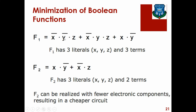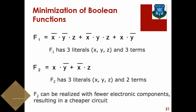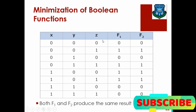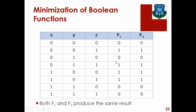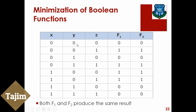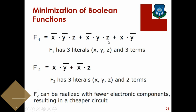We have x, y, and z — 3 inputs — so 2 cubed means 8 rows. The truth table for x, y, z is listed. For F1, the equation given is: x-bar into y-bar into z, plus additional terms, forming the minterm expression.